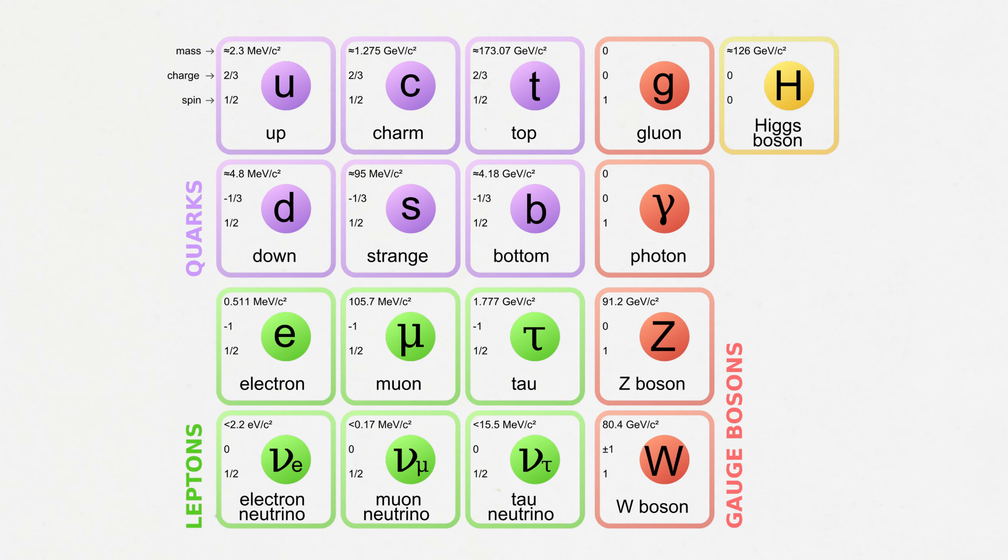If dark matter is matter, then, like ordinary matter, it should consist of some particles. We know 17 particles that make up the world. They form the standard model, and none of them resemble dark matter. Most likely, new particles will have to be added to them.